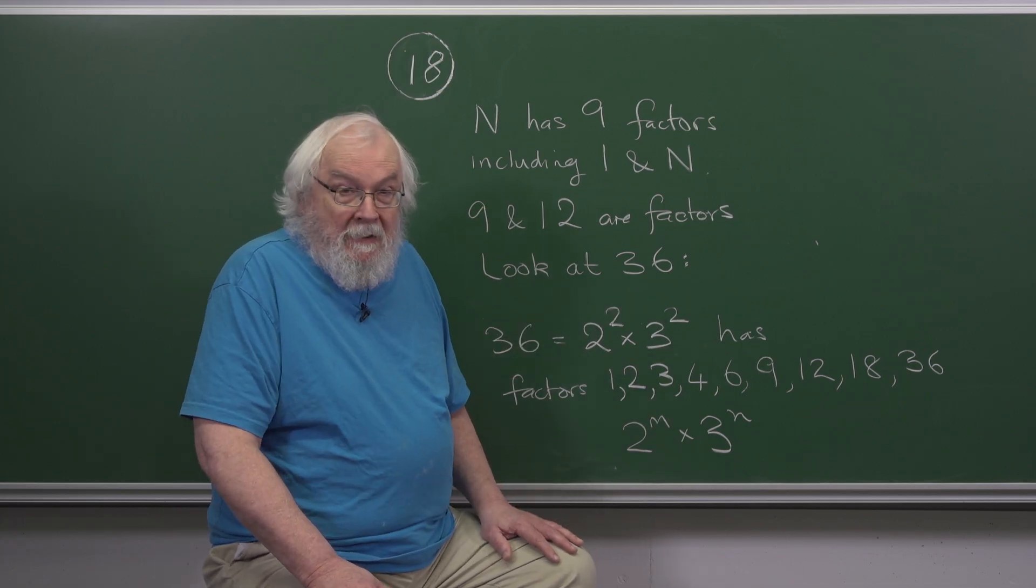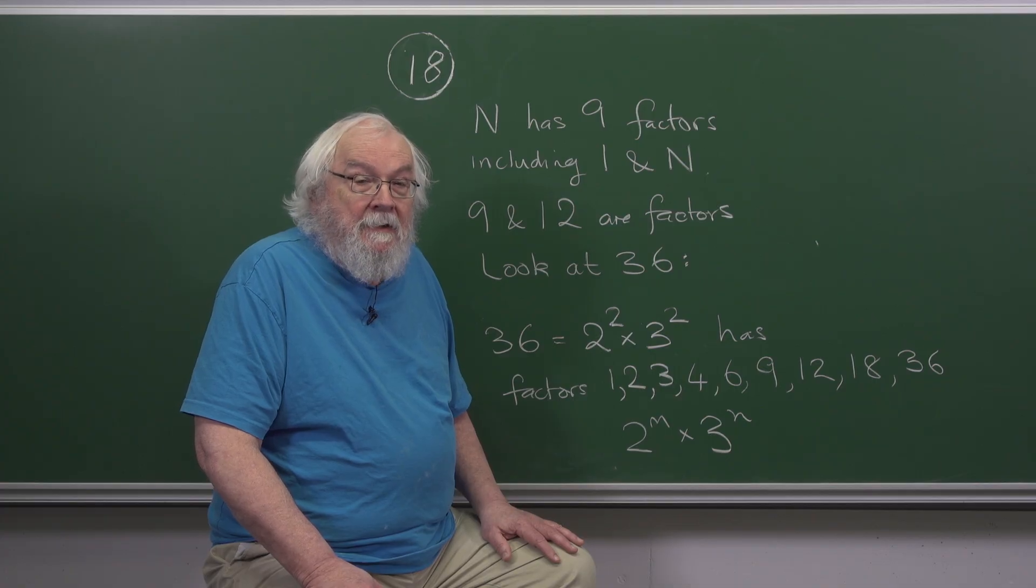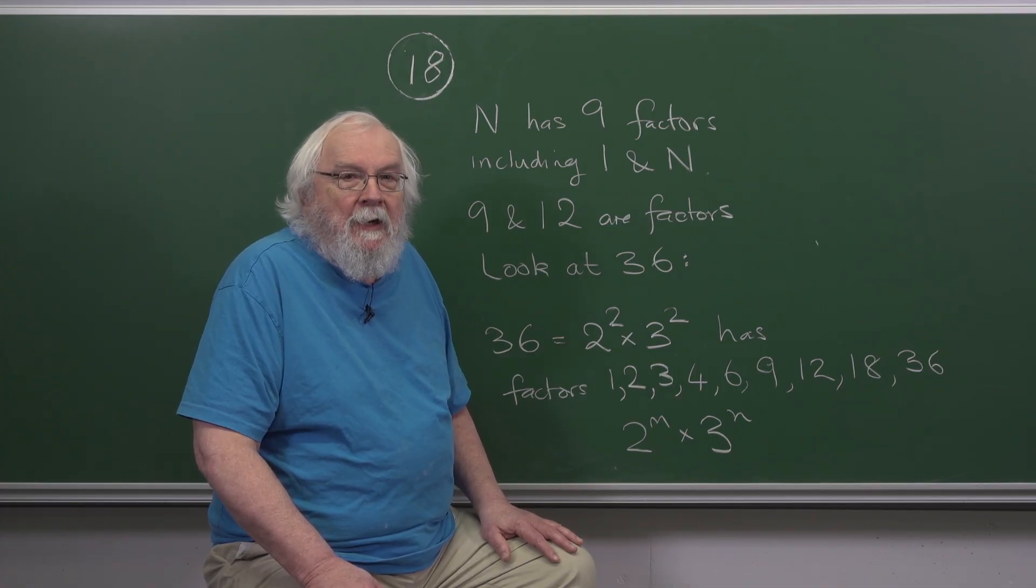Well, the smallest number into which 9 and 12 both divide is 36, so let's have a quick look at that one.